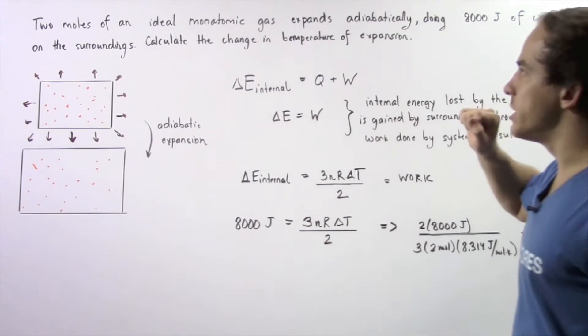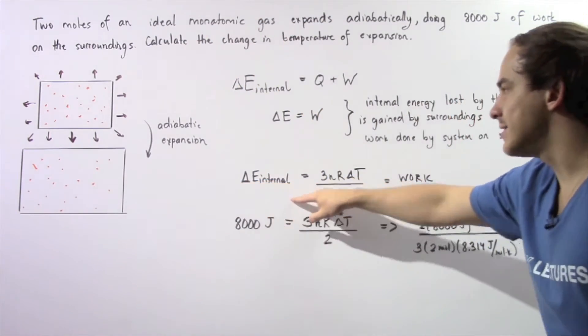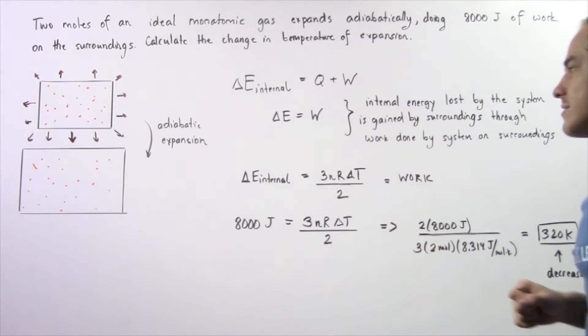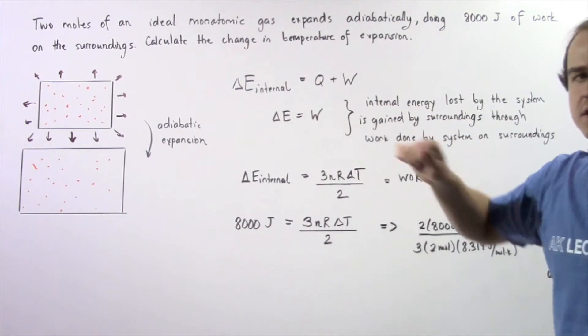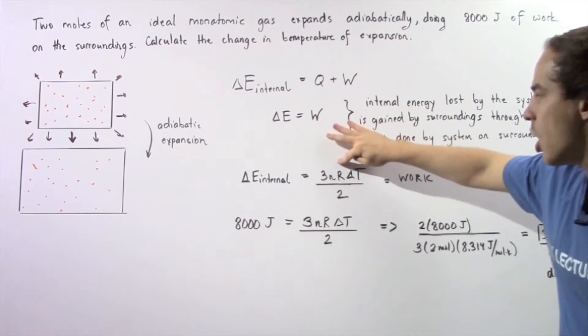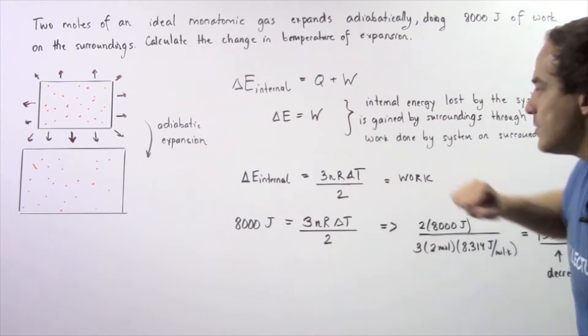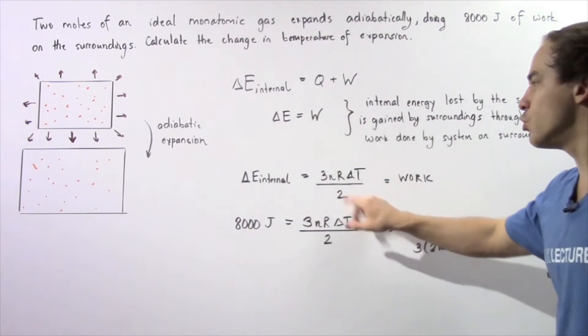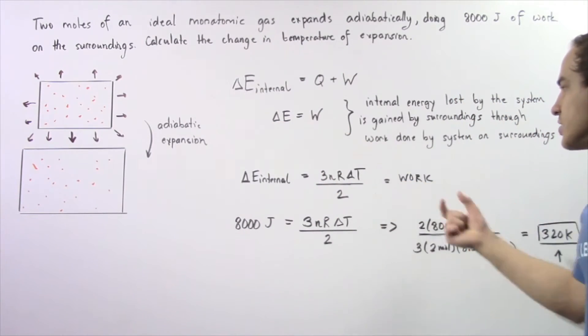Because we're dealing with an ideal monatomic gas, the change in internal energy equals 3 multiplied by N (the number of moles) multiplied by R (the universal gas constant) multiplied by the change in T, divided by 2. By this equation, this equals the work.